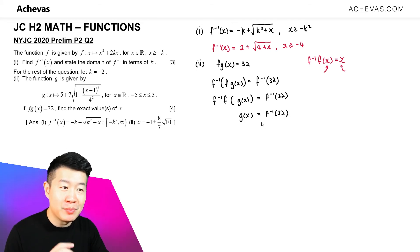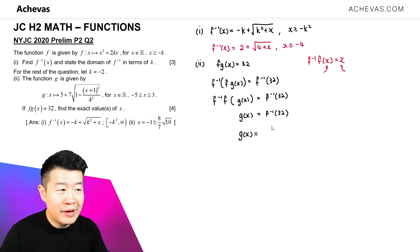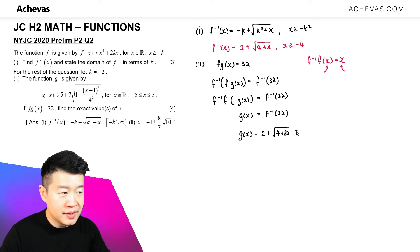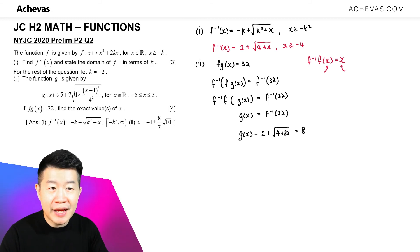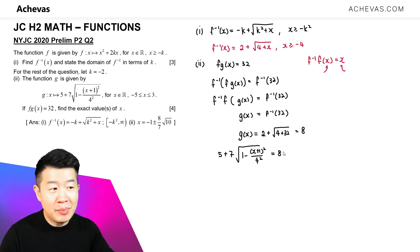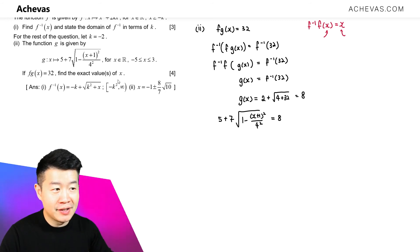Now we know g(x) = f⁻¹(32) = 2 plus square root of 4 plus 32 = 2 plus square root of 36 = 2 plus 6 = 8. So g(x) = 8. And from the given expression for g(x), which is 5 plus 7 times square root of (1 minus ((x+1)²/4²)) equals 8. This is an equation which is easier for us to solve and get the exact value of x.